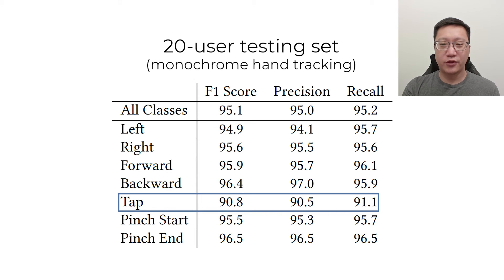Tap also had the fewest training samples, about half that of pinch, which may bias the model. Increasing the quantity and variety of tap samples may help.